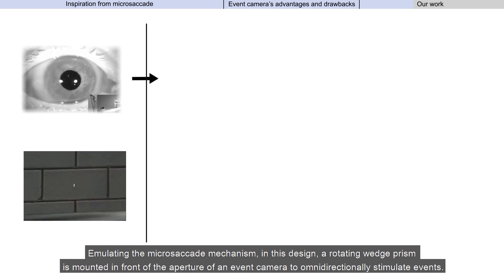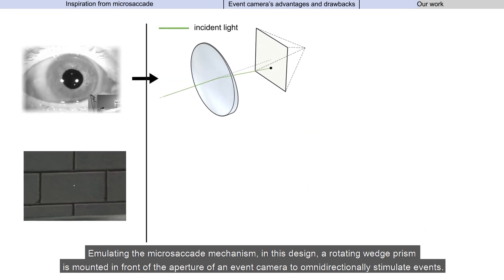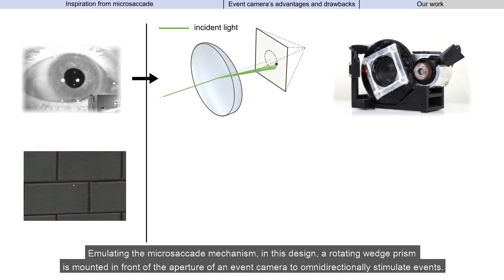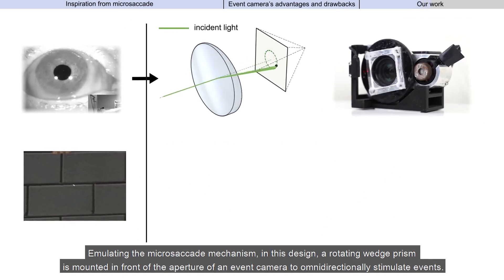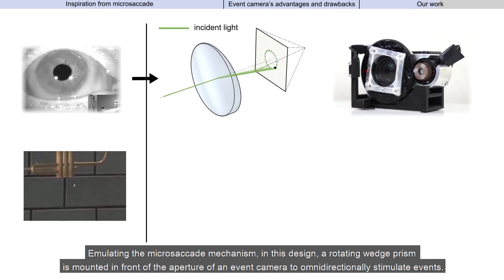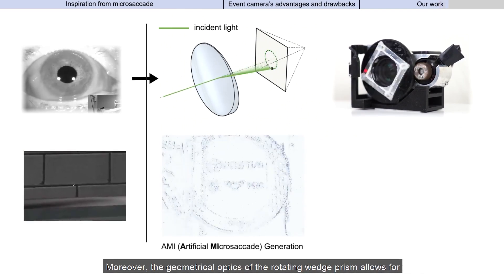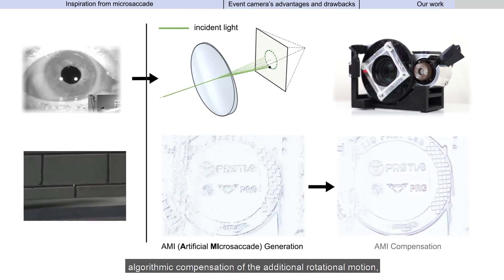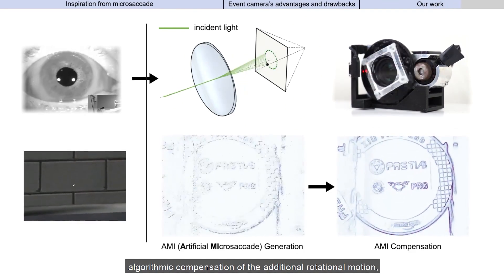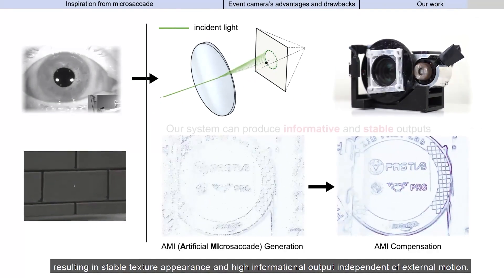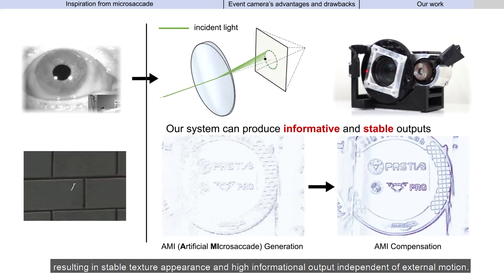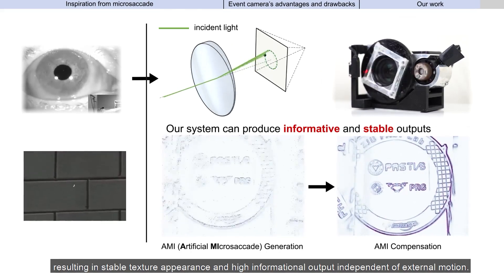Emulating the microsaccade mechanism, in this design, a rotating wedge prism is mounted in front of the aperture of an event camera to omnidirectionally stimulate events. Moreover, the geometrical optics of the rotating wedge prism allows for algorithmic compensation of the additional rotational motion, resulting in stable texture appearance and high informational output independent of external motion.